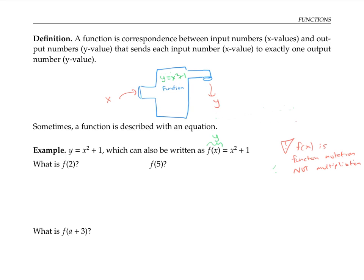For example, if we want to evaluate f of two, we're plugging in two as input for x. Since f of two means two squared plus one, f of two is going to equal five. Similarly, f of five means I plug in five for x, so that's going to be five squared plus one, or 26.